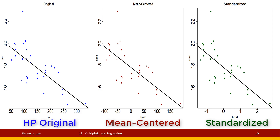Plotting these out, the original is on the left in blue, the mean centered is in the middle in red, and the standardized is on the right in green. All plots have the same data points and the same regression line slopes. What differs are the scales of the x-axis variables — horsepower is displayed differently depending on whether it's original, mean centered, or standardized.